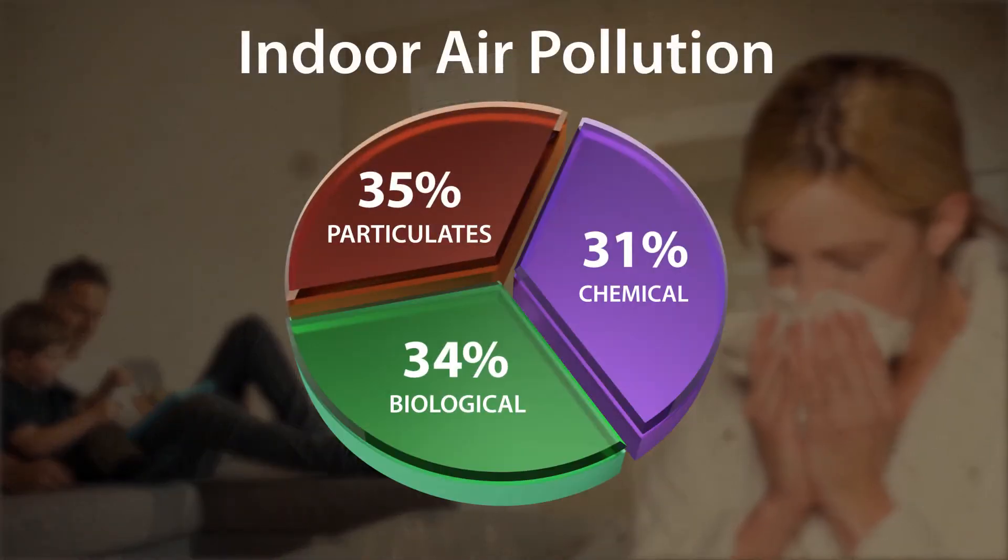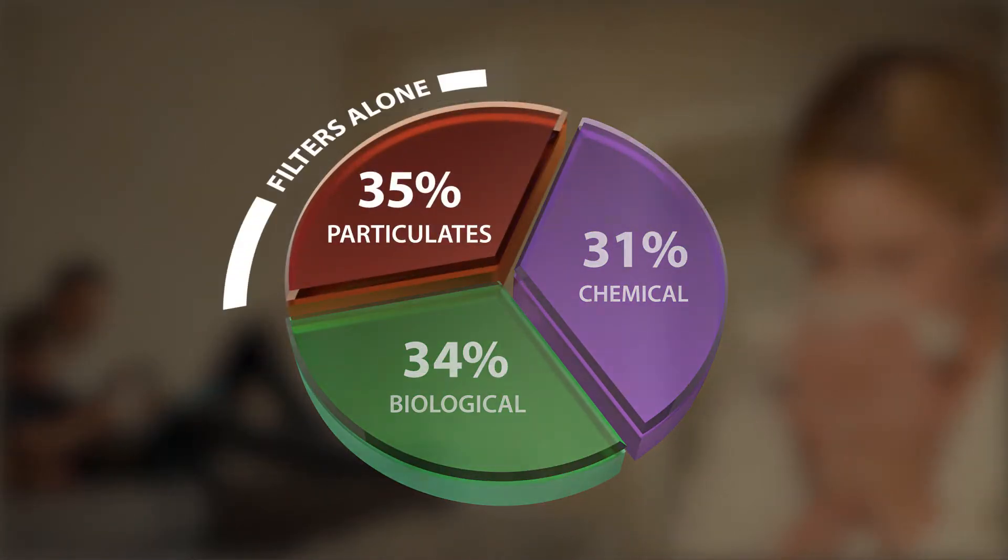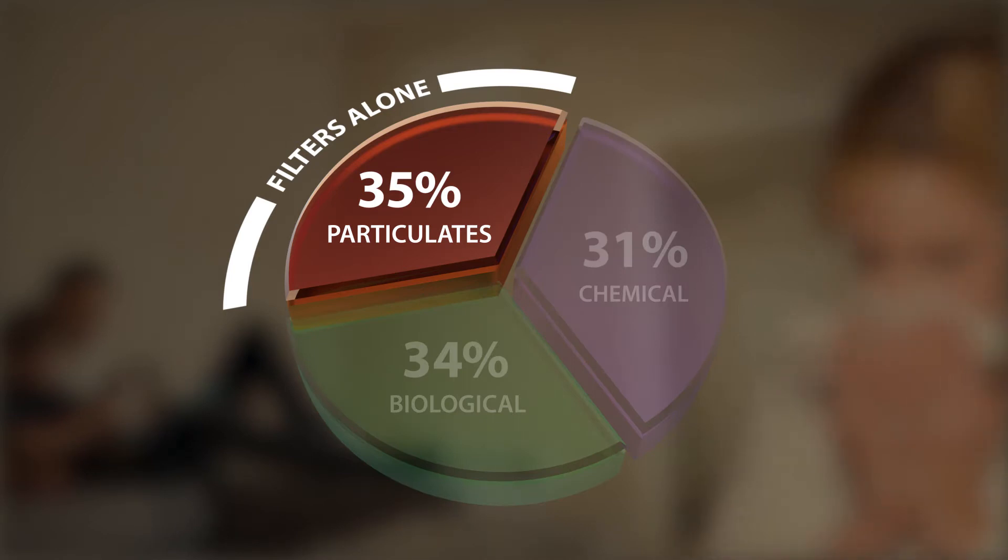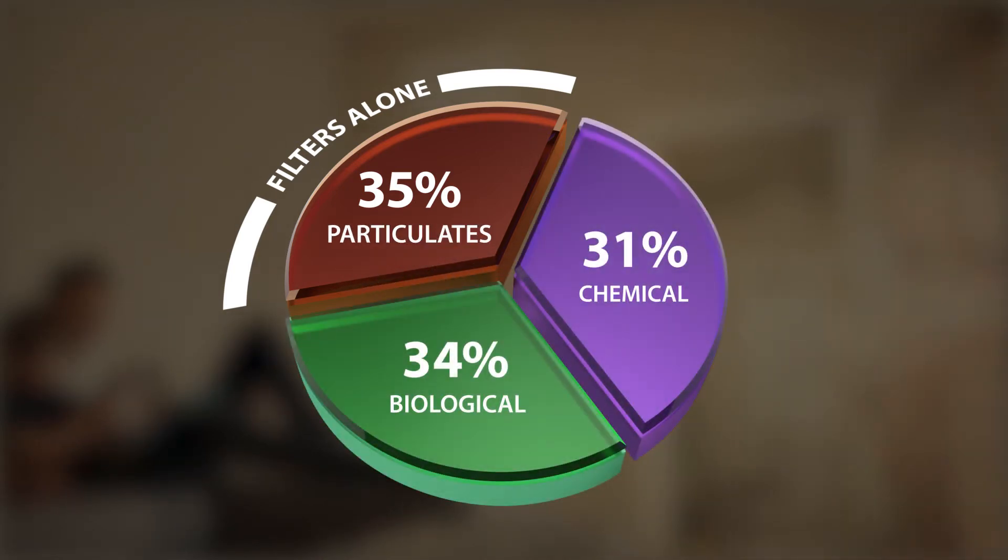Indoor air pollution is divided into three types. Air filters only capture one type, particulates. That leaves the other two untreated.